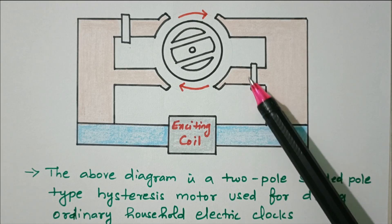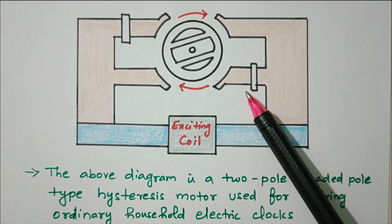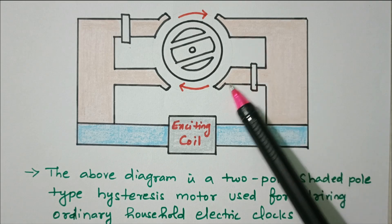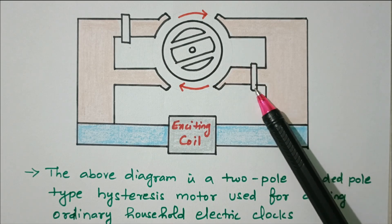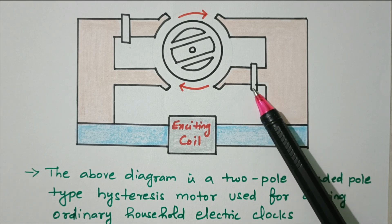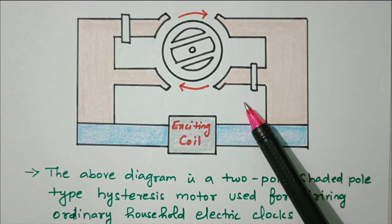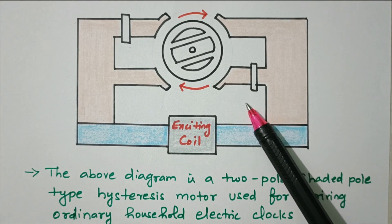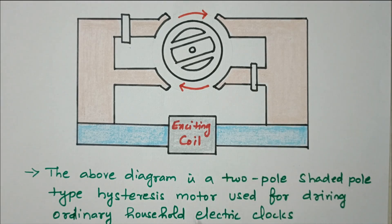The flux produced in the shaded coil and the main flux have a 90-degree phase difference, so we are getting a revolving magnetic field. Our aim is to have two windings with 90-degree phase difference. The main winding is one winding, and the shaded pole is the second winding. Because of magnetic induction, the flux produced in the shaded pole has a 90-degree phase difference with the main flux.